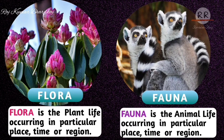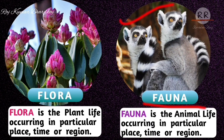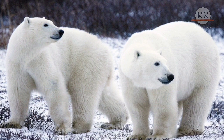Now let's talk about fauna. Fauna is the animal life occurring in a particular place, time, and region. Fauna represents animal life in a particular place, particular time, or particular region. For example, polar bears.